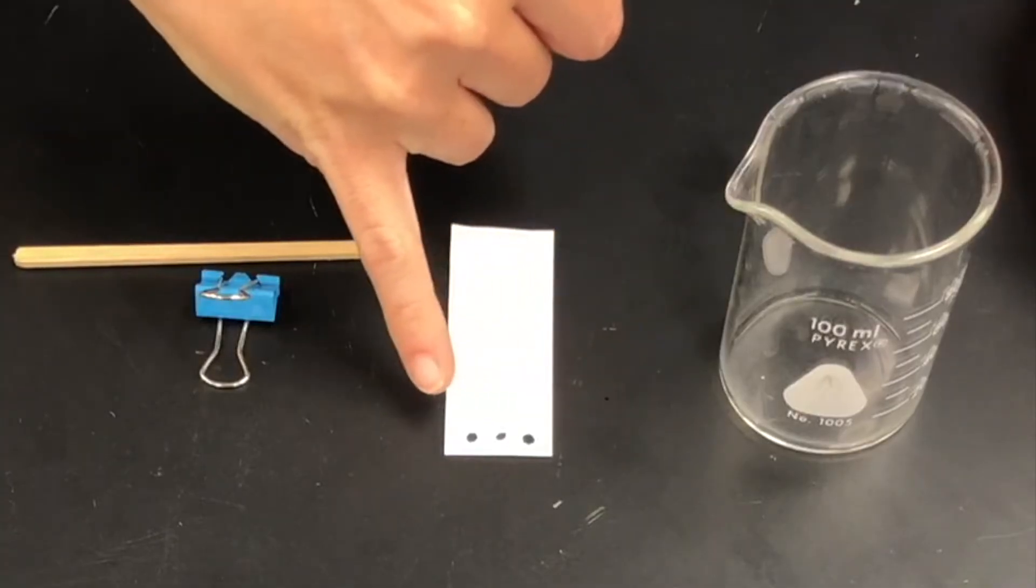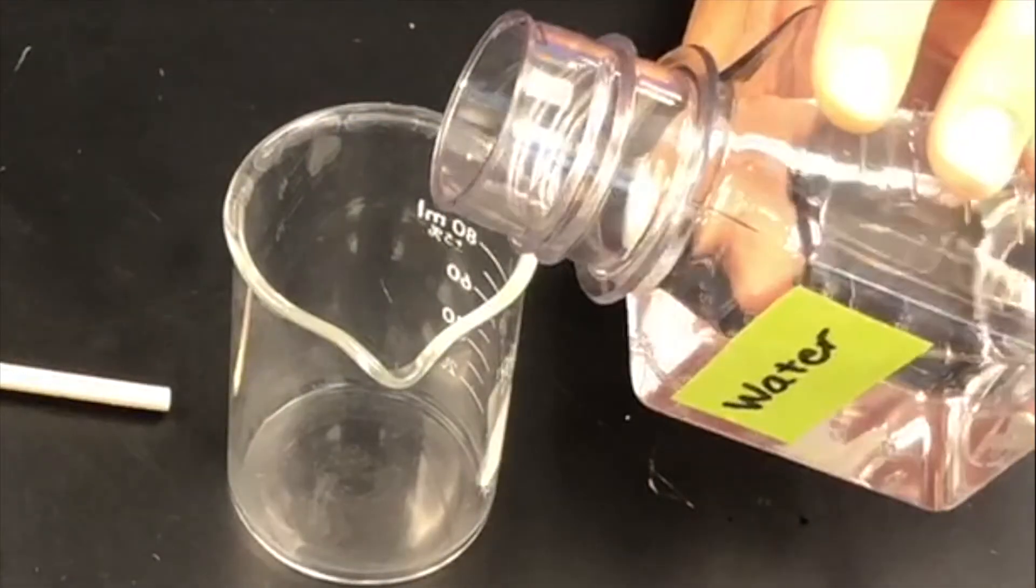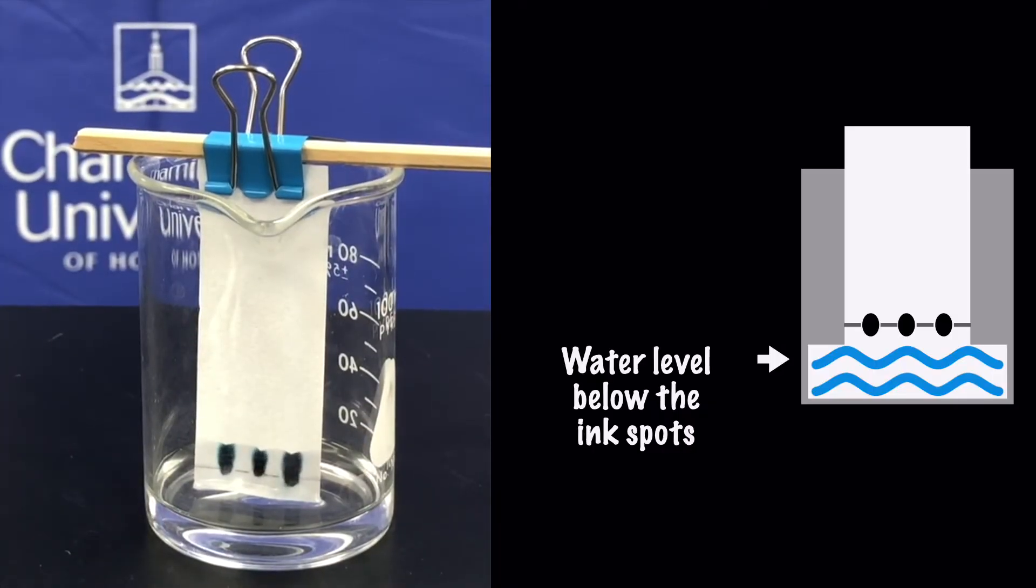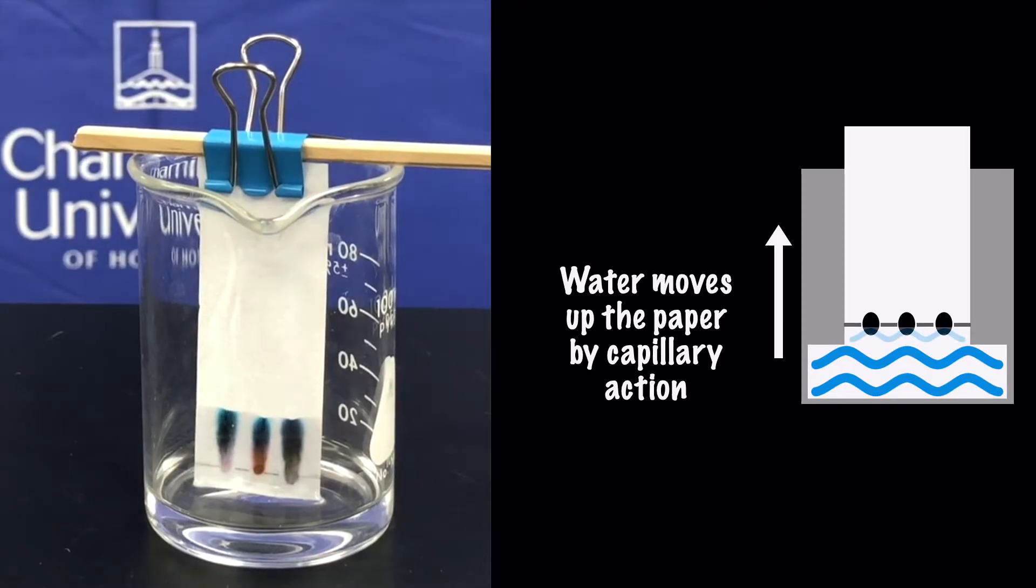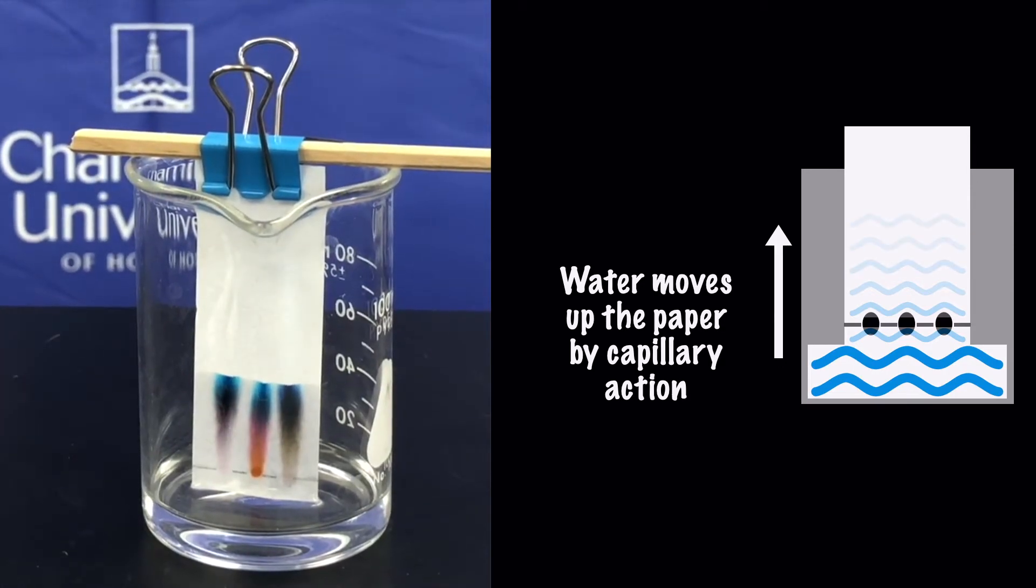Now we have all of our samples spotted along the bottom. Our chromatography paper sits inside of the beaker without touching the bottom. Pour a small amount of water into the bottom of the beaker. We only want it to fill the beaker so that it will be below the level of the spots. The paper is going to absorb some of the water when we place it into the beaker. The water will then start to move up the paper by capillary action.